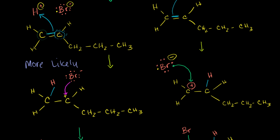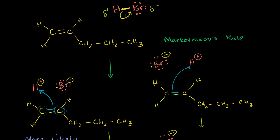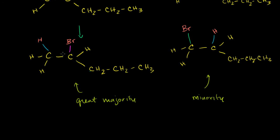Additionally, the carbon bonded to more functional groups — things other than hydrogen — is more likely to bond to other functional groups. So looking at this reaction: the left carbon already has more hydrogens, so it's more likely to get the hydrogen. The right carbon has more functional groups attached, so it's more likely to attach to the bromine. And that product — 2-bromopentane — is experimentally the majority product.